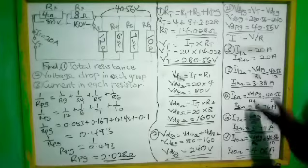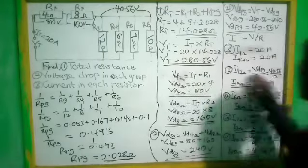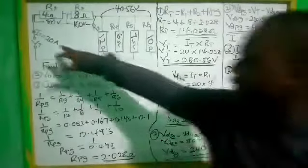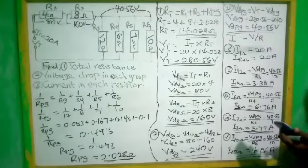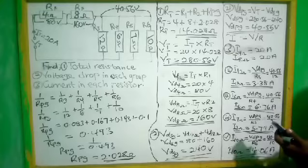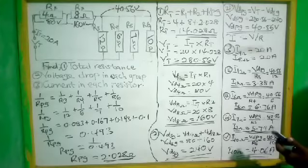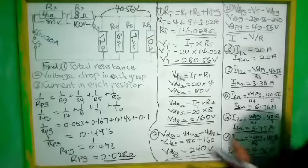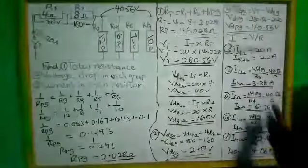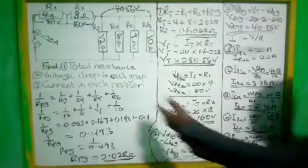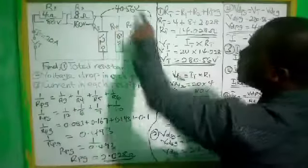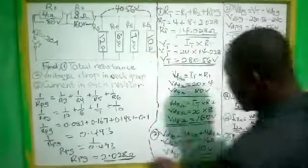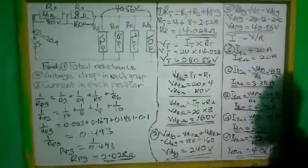Now let's add these four currents flowing in each branch to verify. We have 3.38 plus 6.76 plus 5.79 plus 4.06, which equals 19.99, approximately 20 amps — confirming our answer is correct. Also, adding the voltage drops: 80 plus 160 plus 40.56 gives 280.56 volts, matching our total voltage.